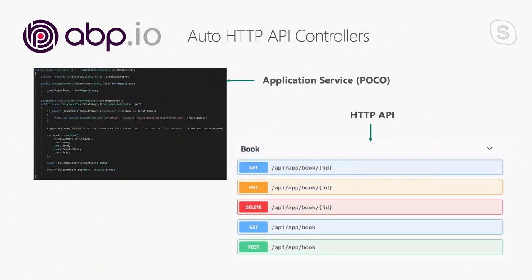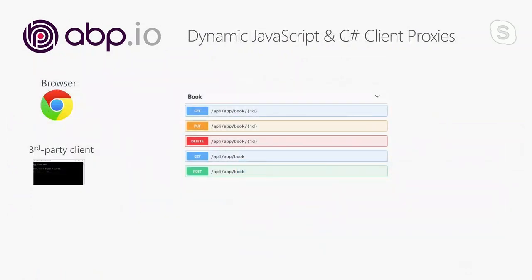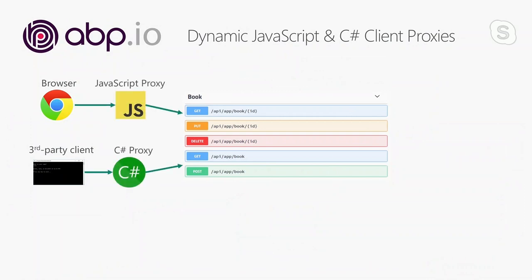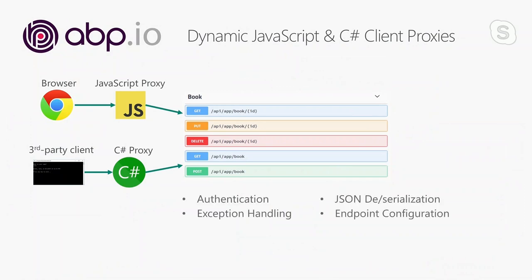Once you create an application service, you typically want to expose it as an HTTP API by writing an API controller. ABP can automatically create API controllers by convention based on your method names, input, and output types — so most of the time you don't need to manually create API controllers, arrange routes, or HTTP methods. When you want to use the API from a client application, ABP can dynamically create JavaScript and C# proxies. You can use these client proxies to call the remote HTTP API just like calling a regular method — without dealing with authentication, exception handling, JSON serialization, endpoint configuration, and so on.